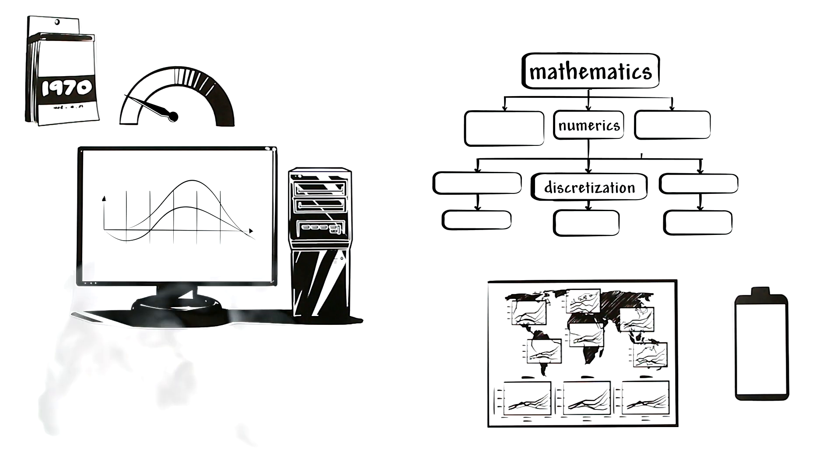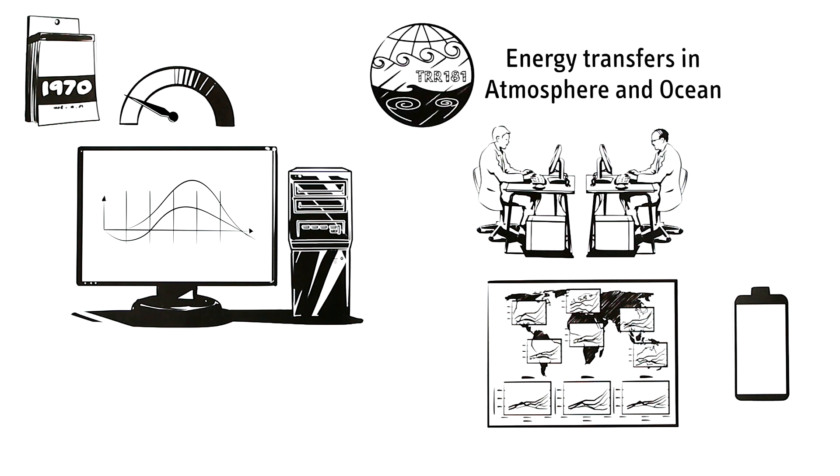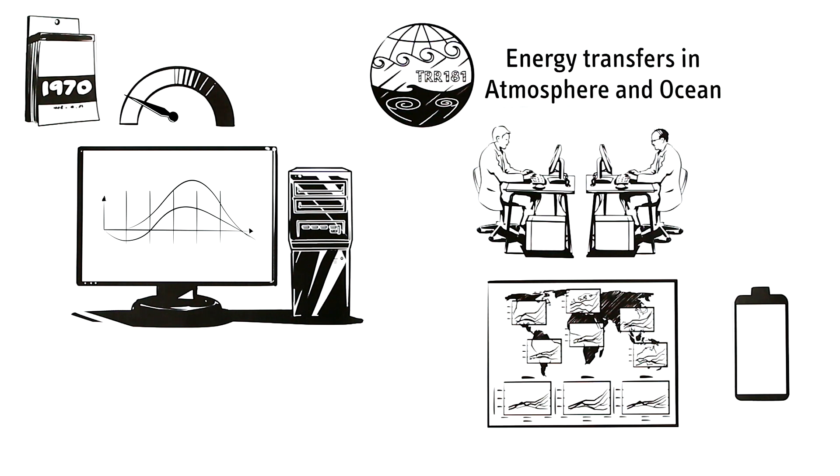Violating laws of conservation while discretizing is something the mathematicians of the research project, Energy Transfers in Atmosphere and Ocean, are trying to minimize. They especially focus on energetic processes in the oceans.